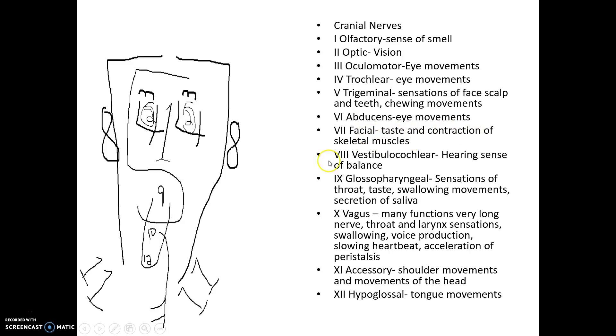Facial: taste and contraction of skeletal muscles in the face region. Vestibulocochlear: our hearing. The cochlear portion gives us hearing, and the vestibulo portion gives us our sense of balance. That's cranial nerve number 8.